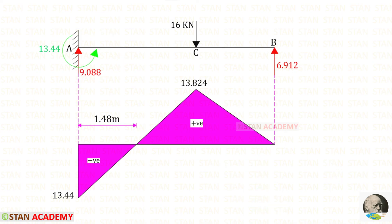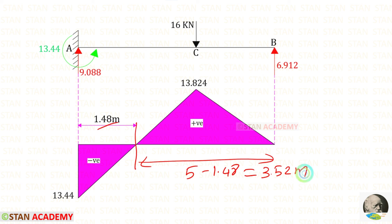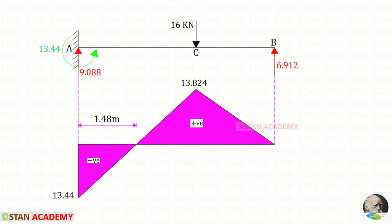If you want to find the point of contraflexure from the right side, subtract 1.48 from the total length of 5, giving 3.52 meters. Now we are going to end this session. Thank you for watching this video.